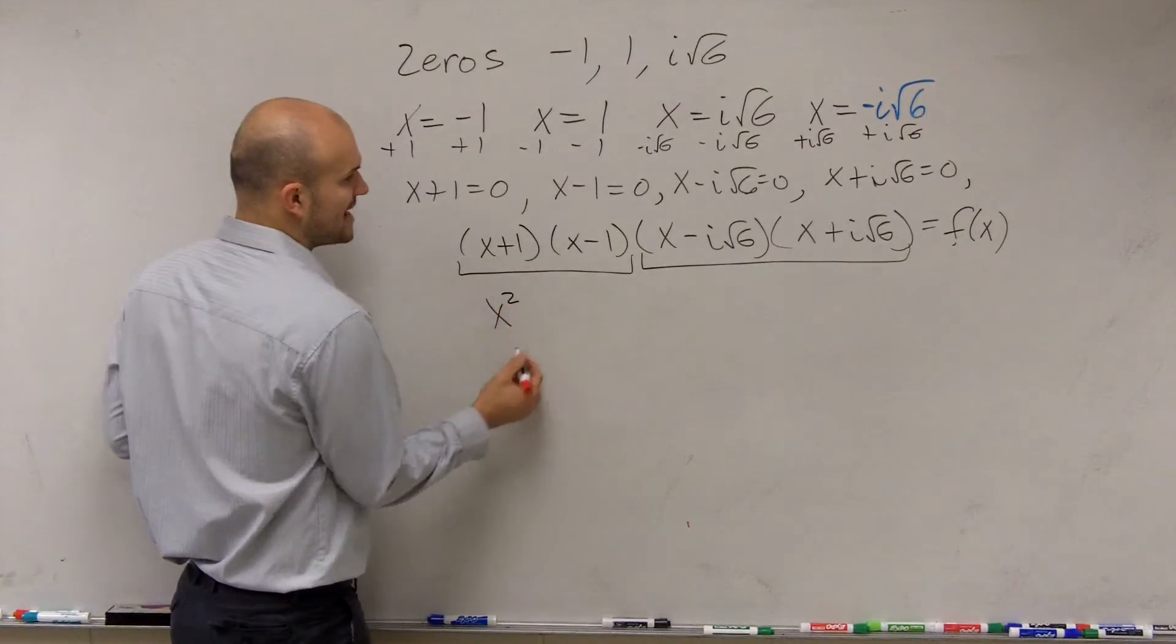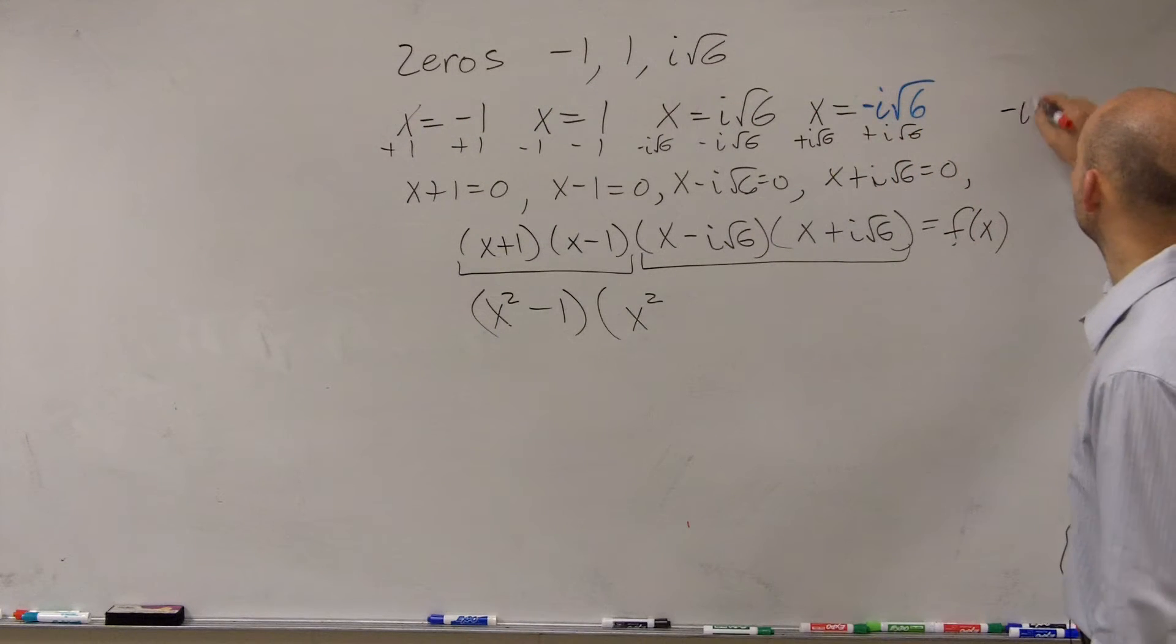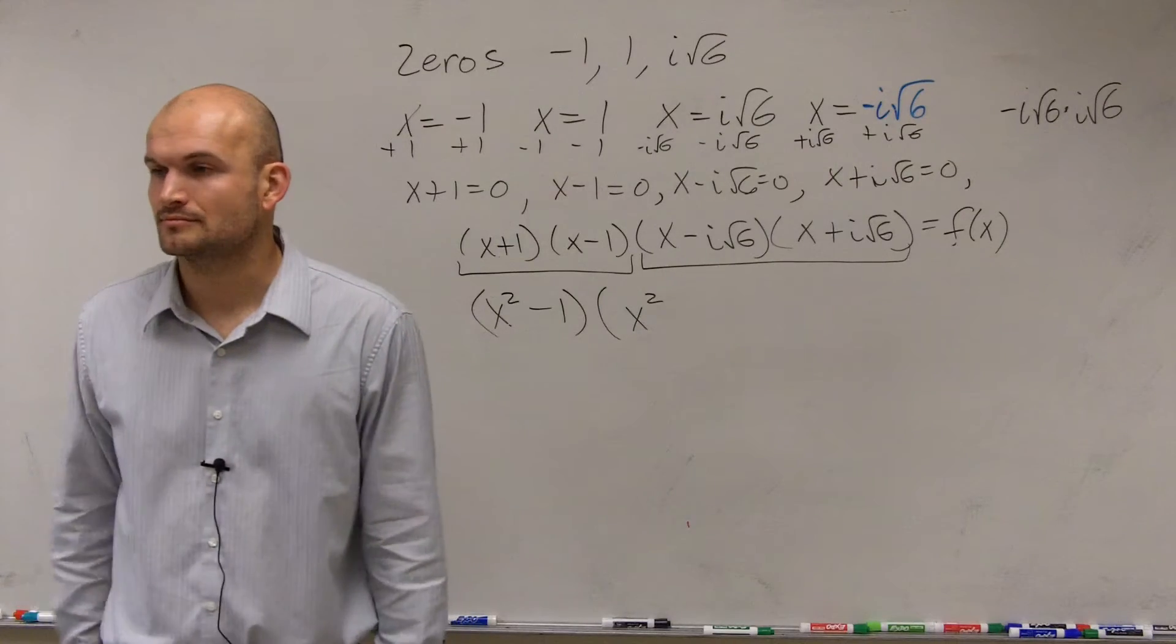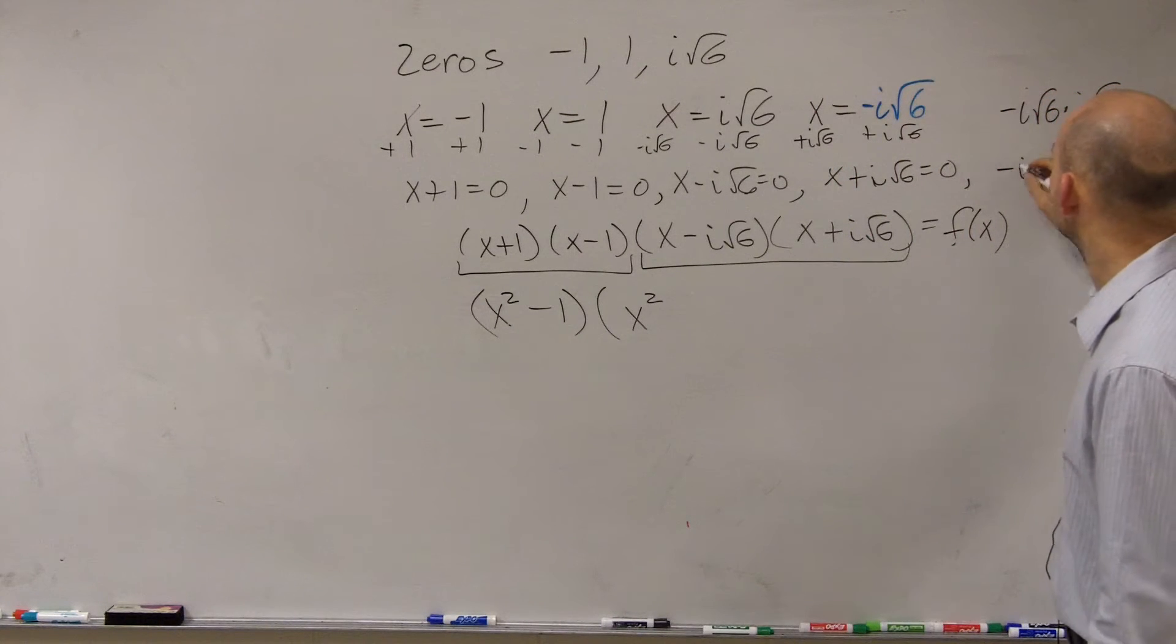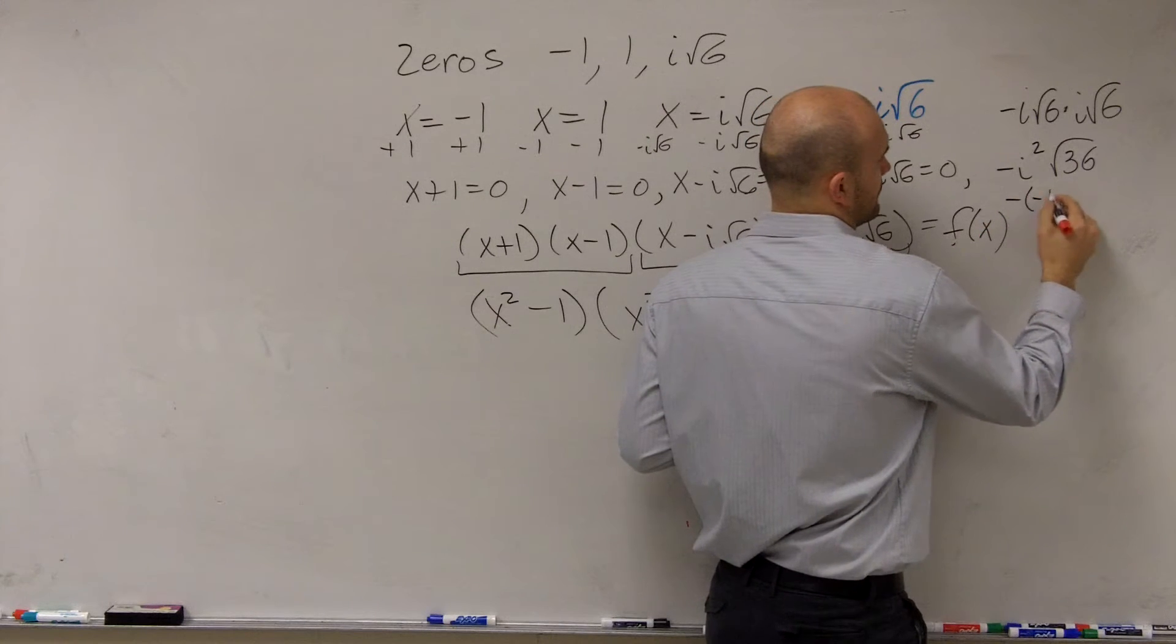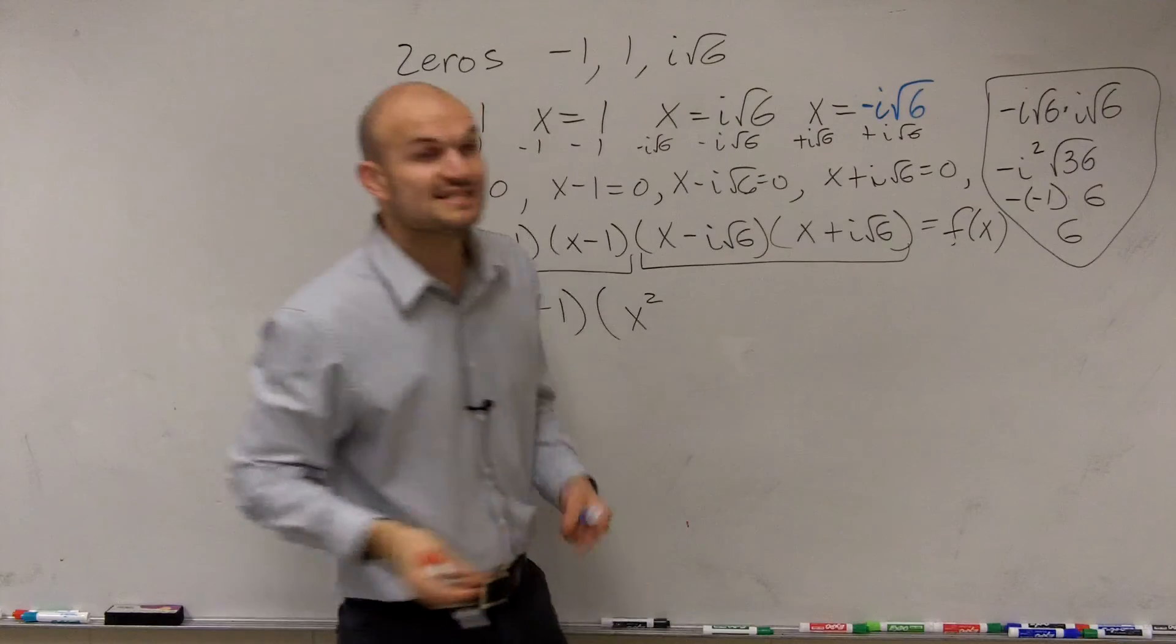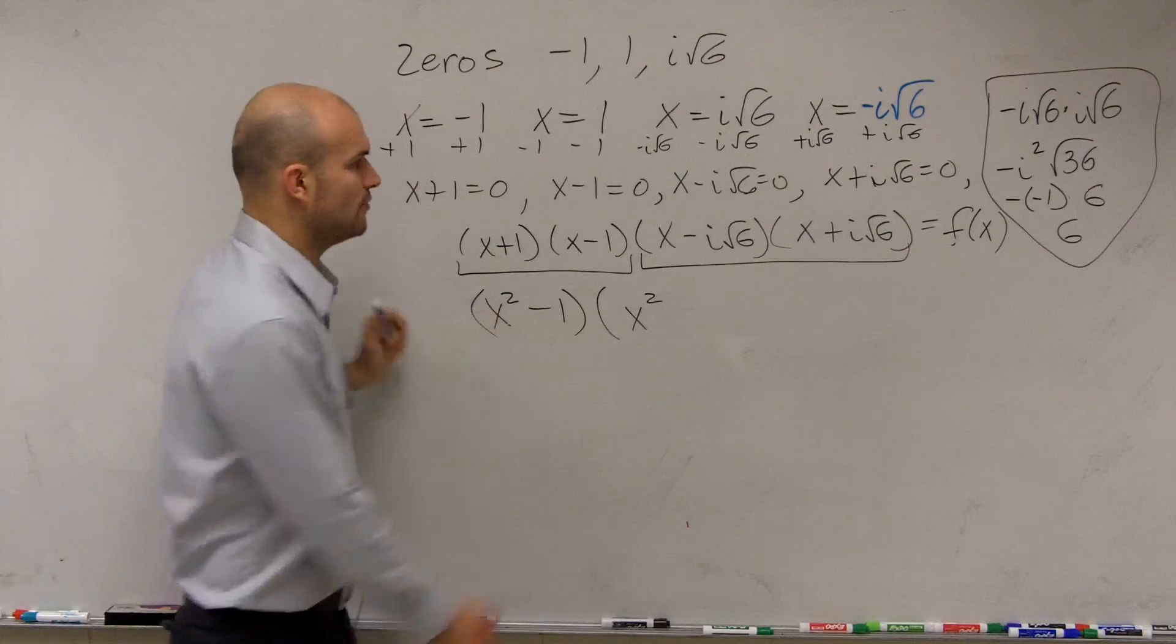So let's go through this a little bit quicker. This becomes x squared minus 1 times, this becomes x squared. Now, here's where a lot of students will make a mistake, so I'll write this out. Negative i square root of 6 times i square root of 6. So how do you multiply negative i times square root of 6 times i square root of 6? So I'm going to have negative i squared, and then times the square root of 36, which is just 6. So then I have i squared, which becomes what? So we have i squared, which gives us negative 1. Negative 1 times negative is going to become a positive 1. Positive 1 times 6 is 6. So therefore, this one is just going to be x plus 6.